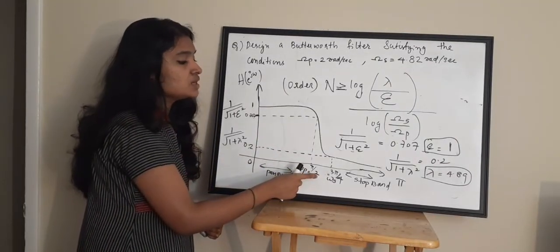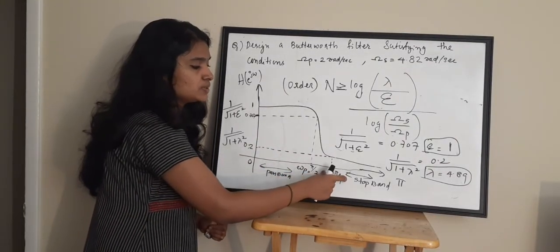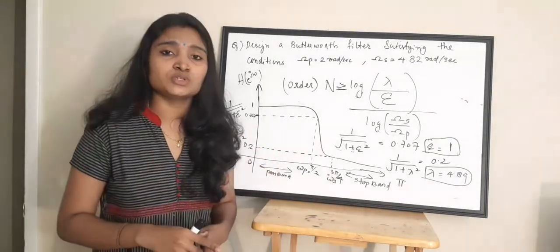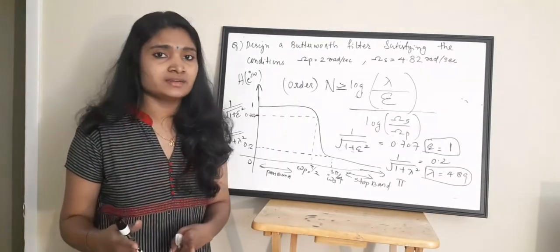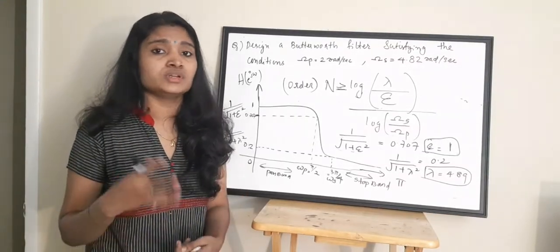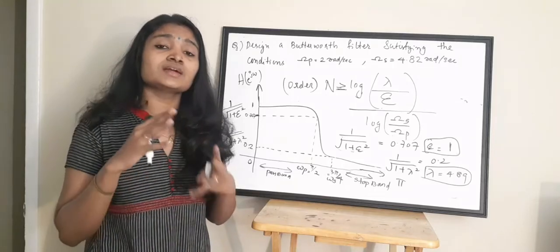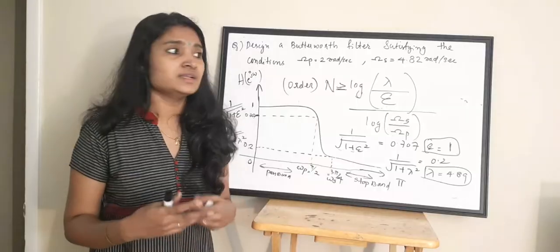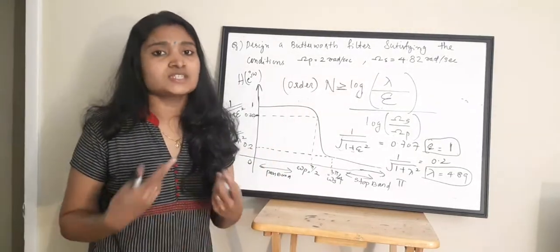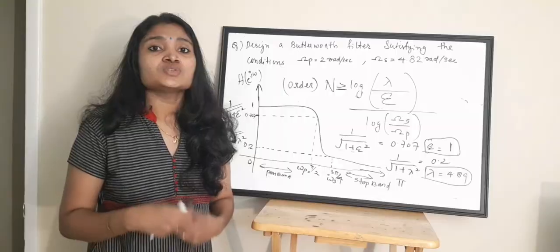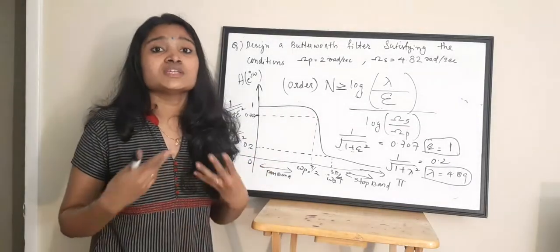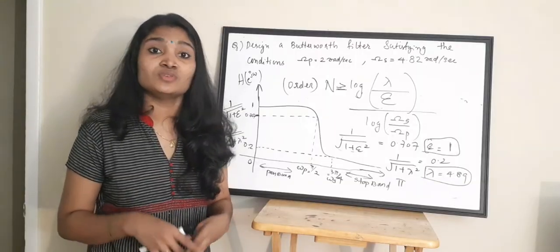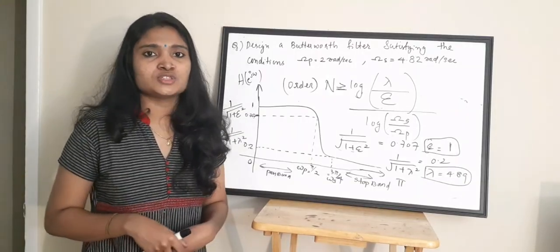Looking at the magnitude response: the passband edge frequency and stopband edge frequency are clearly identified on the frequency axis. Given any conditions, you should be able to draw the magnitude response directly. In the next part we will find the order and the transfer function equations for various orders. If you found this video useful, please give it a thumbs up and share it with your friends.